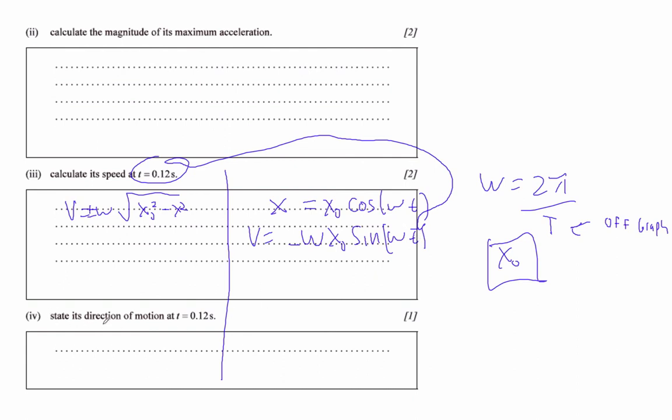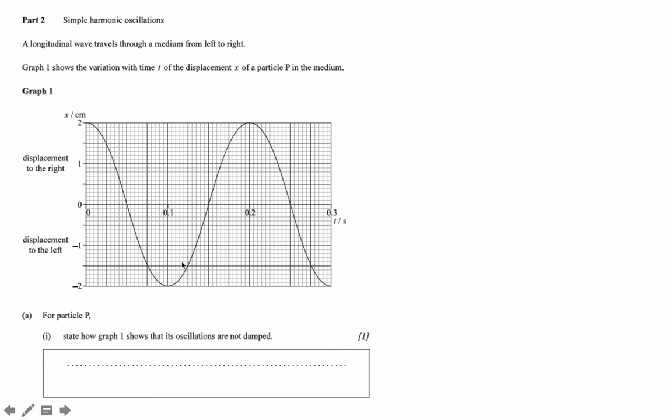Now, on letter 4, it says state the direction of the motion at t is 0.12 seconds. Well, this is interesting. So at 0.12, we're somewhere here. So 0.12 is in there.